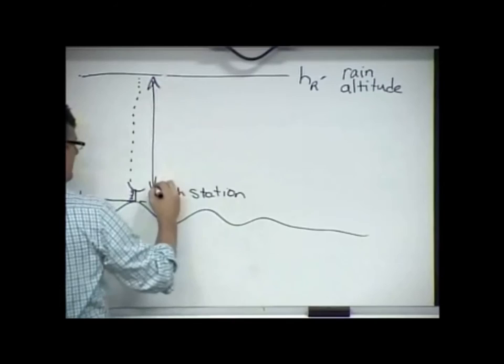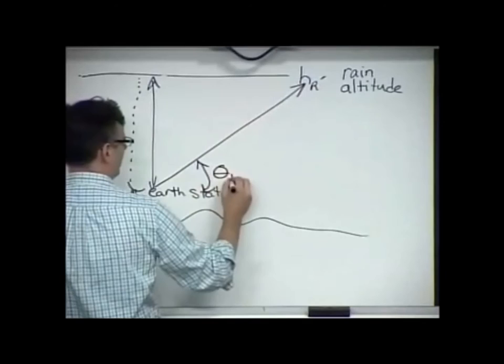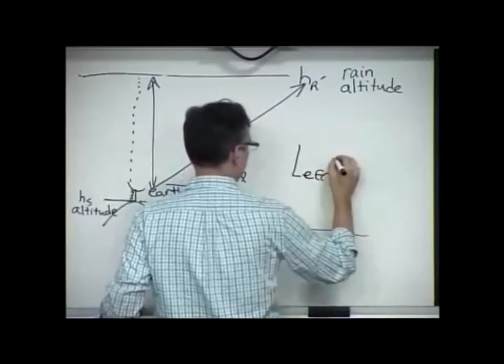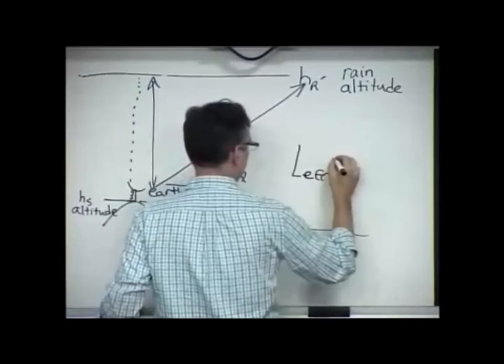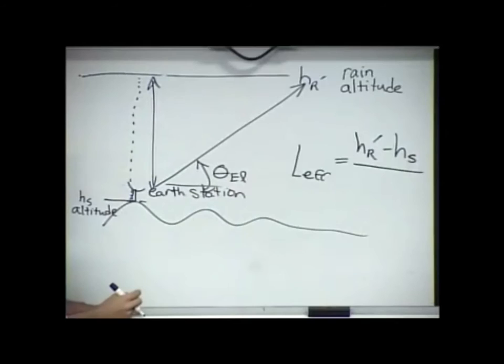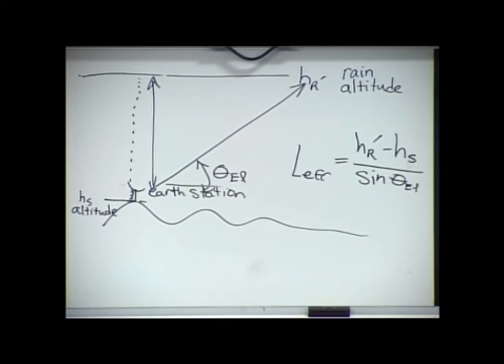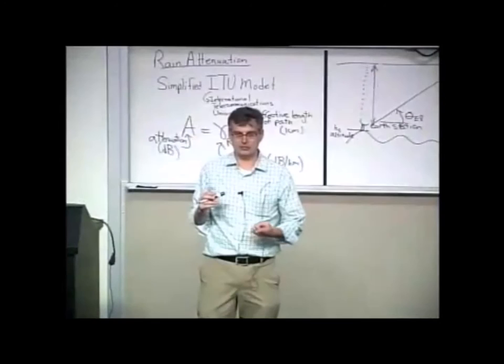You subtract your earth station altitude from that. So that gives you this path differential here. And then you need to know what your look angle is. What is your elevation angle? Theta sub l. And so in that case, just using some simple geometry, your effective path length is equal to H r prime minus the altitude of your station divided by the sine of that elevation angle. Remember, elevation angle is measured from the horizon. That's the easy part. That's the high school geometry part.